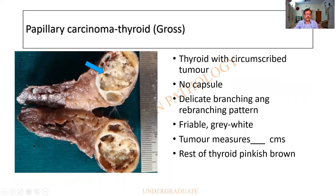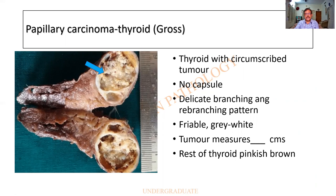This is a beautiful specimen of a thyroid. They have probably done a hemithyroidectomy and found a tumor, or this would have been diagnosed by means of an FNAC — fine needle aspiration cytology. The thyroid shows a circumscribed tumor. Circumscribed is not capsulated; it is somewhat demarcated but not capsulated. It is identifiable because of a delicate branching and rebranching pattern, grayish white in color. The rest of the thyroid is somewhat pinkish brown.